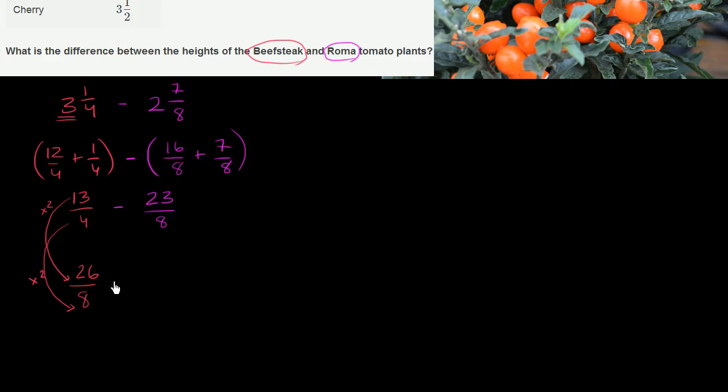And from 26 over 8, we're going to subtract 23 over 8. And so this is going to be over 8, 26 minus 23, which is equal to, and we deserve our drumroll now, 26 minus 23 is 3.